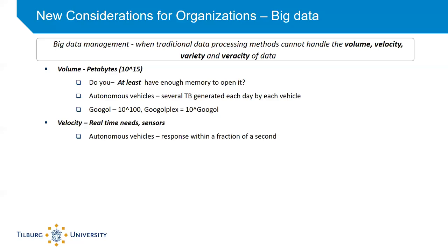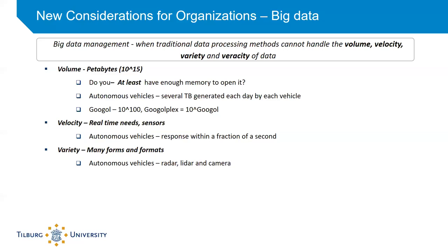Velocity deals with the speed with which you are receiving data and the speed with which the incoming data needs to be analyzed. Consider the example of an autonomous vehicle — the response needs to be given within a fraction of a second. Variety deals with the different forms and formats that data might come in. The sensors involved in autonomous vehicles include radar, lidar, and camera, and each generates data in a different format.